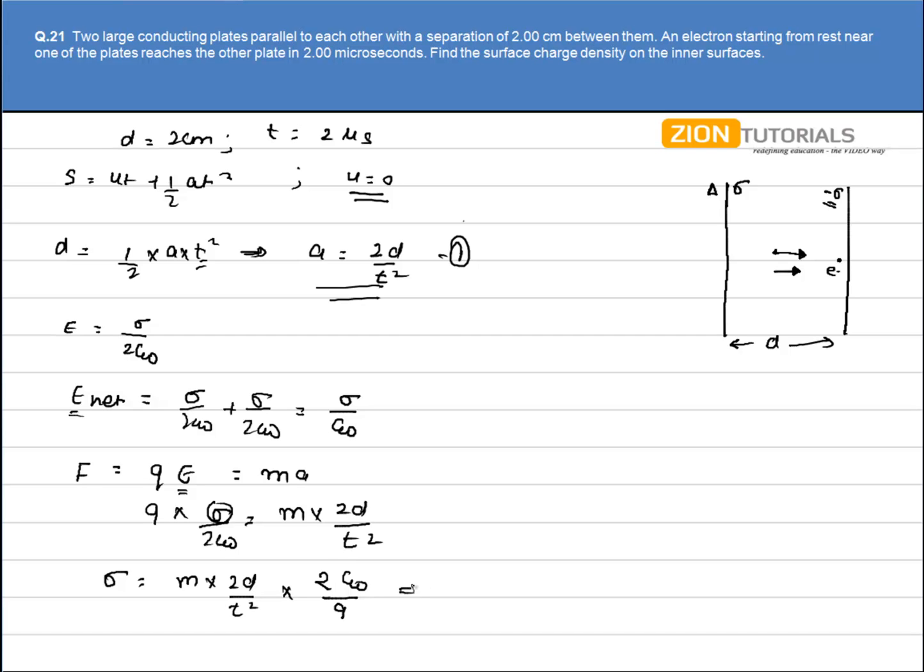So just substitute the values. m is the mass of electron, 2 times d, d is 2 cm or 0.02 m divided by t squared that is 2 into 10 to the power minus 6 whole squared into 2 times epsilon not divided by q that is the charge of electron. So solving this equation I get the value of sigma as 7.5 into 10 to the power minus 7 coulomb over meter squared.